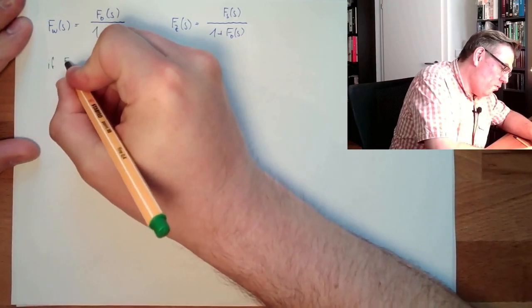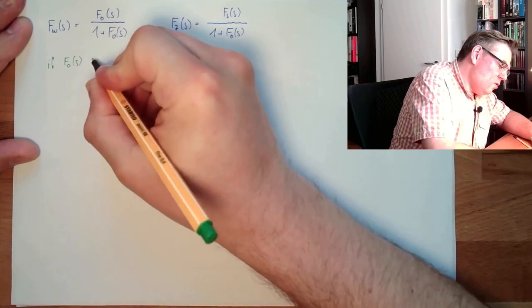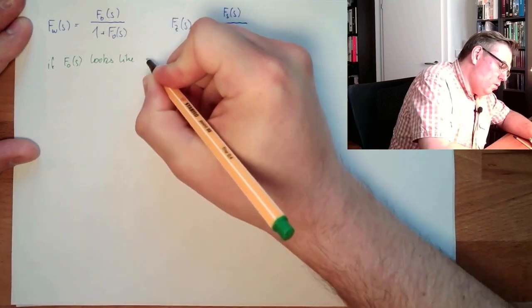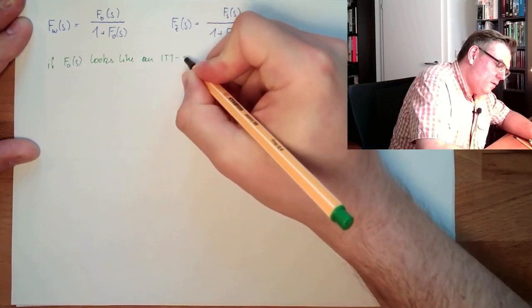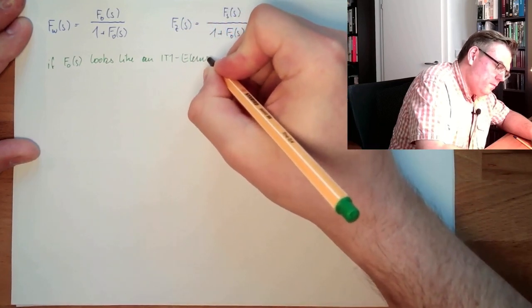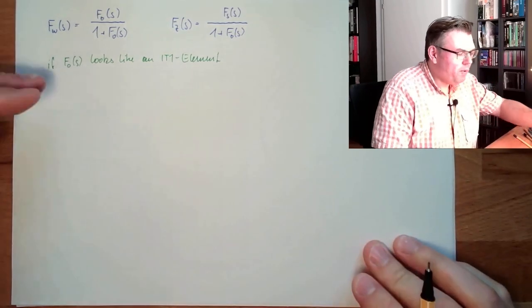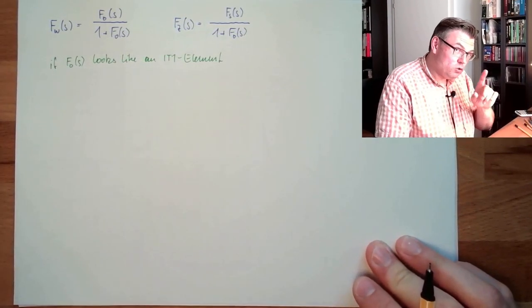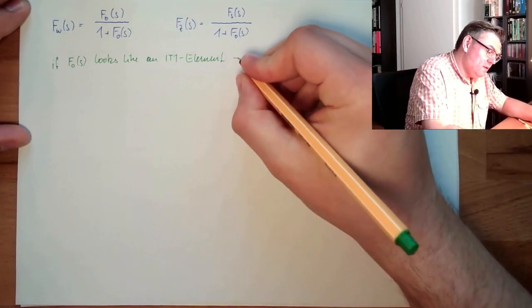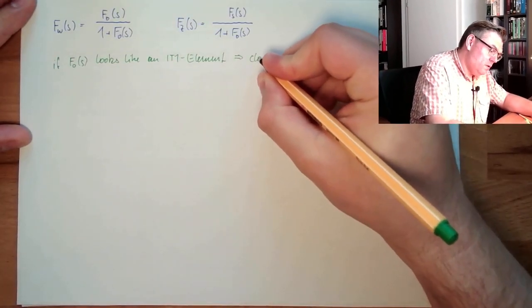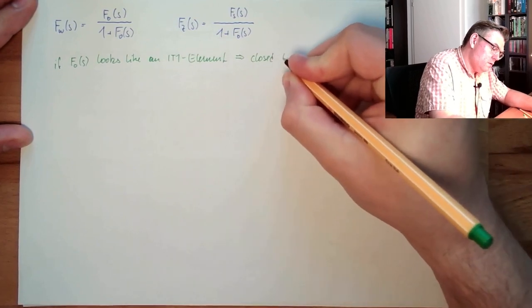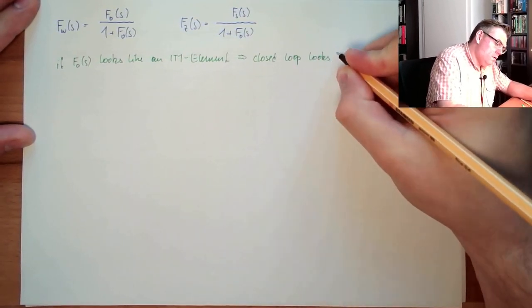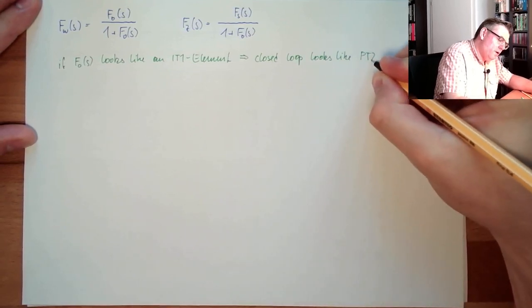If the open-loop transfer function F_O looks like an IT1 element, then the closed-loop transfer function looks like a PT2 element.